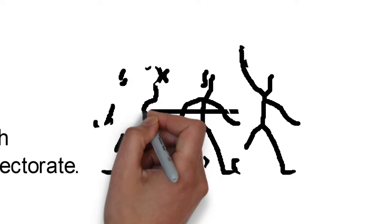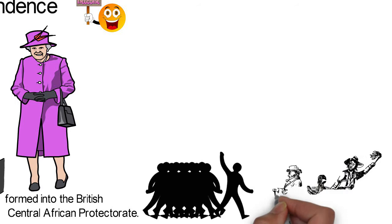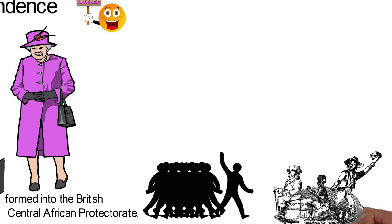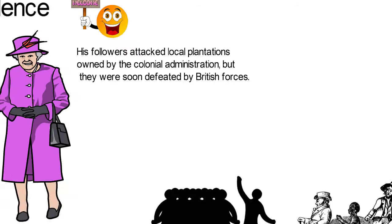In January 1915, John Chilimbwe, a pastor in southeastern Nyasaland, led an unsuccessful revolt known as the Chilimbwe Uprising against British rule. Chilimbwe was opposed to the recruitment of Nyasas in the British Army's campaign in East Africa, as well as the system of colonial rule. His followers attacked local plantations owned by the colonial administration, but they were soon defeated by British forces. Chilimbwe was killed and many of his followers were summarily executed.